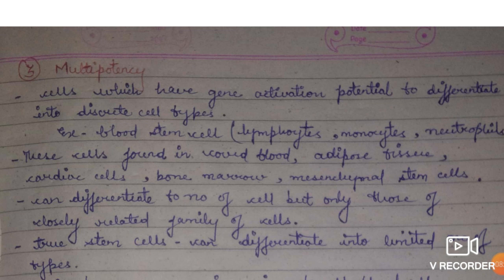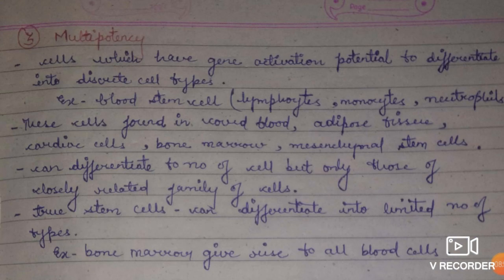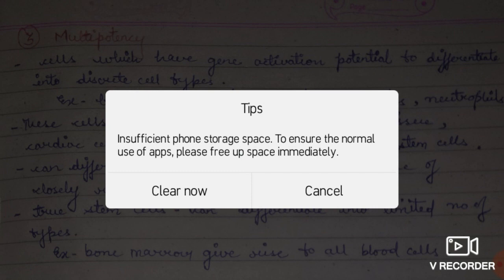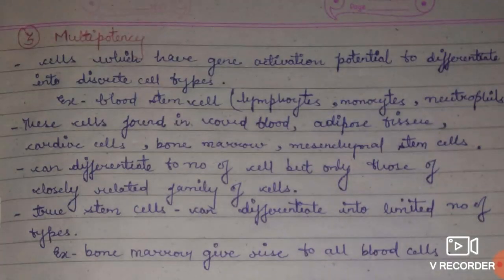Multipotency refers to cells that can give rise to a discrete — meaning separate — number of cell types. For example, blood stem cells can give rise to lymphocytes, monocytes, and neutrophils. These multipotent cells are present in cord blood, adipose tissue, cardiac tissue, and bone marrow. They can differentiate and give rise to cells, but only within a related family, differentiating into a limited number of cell types.